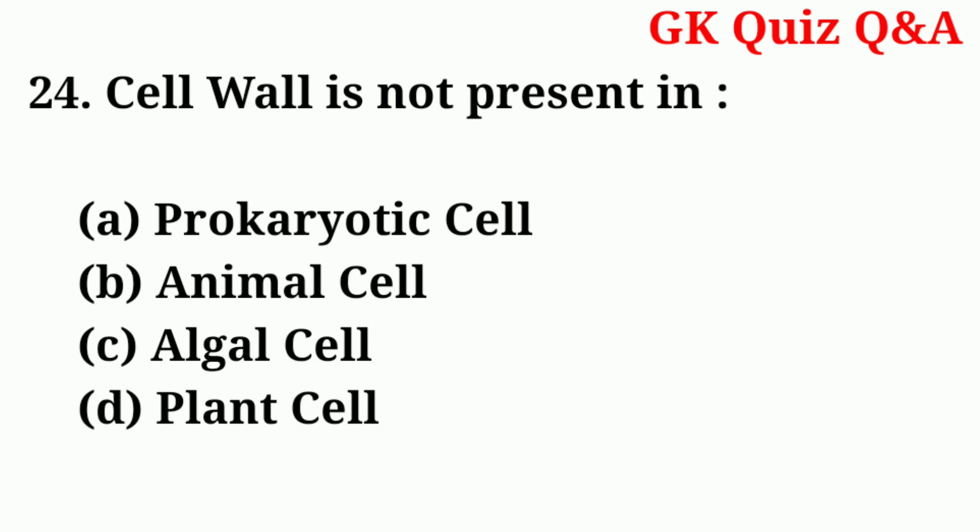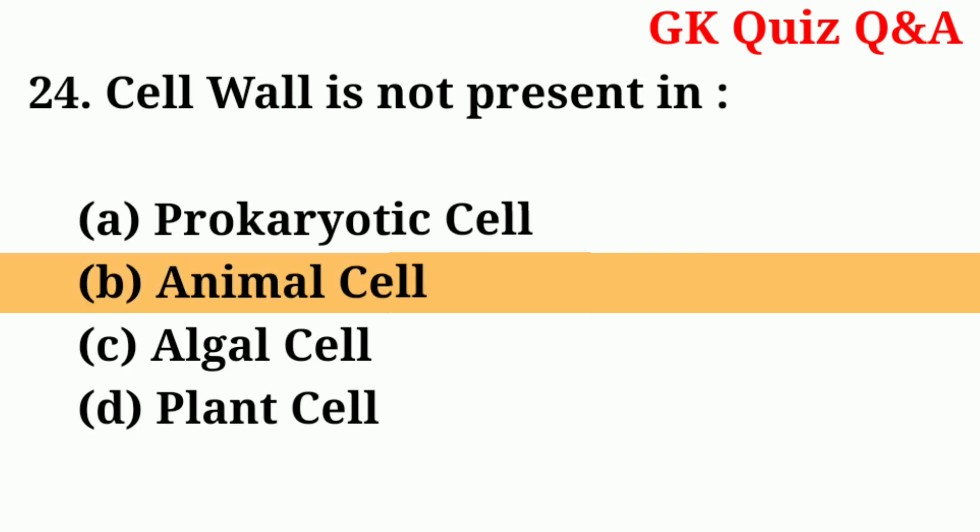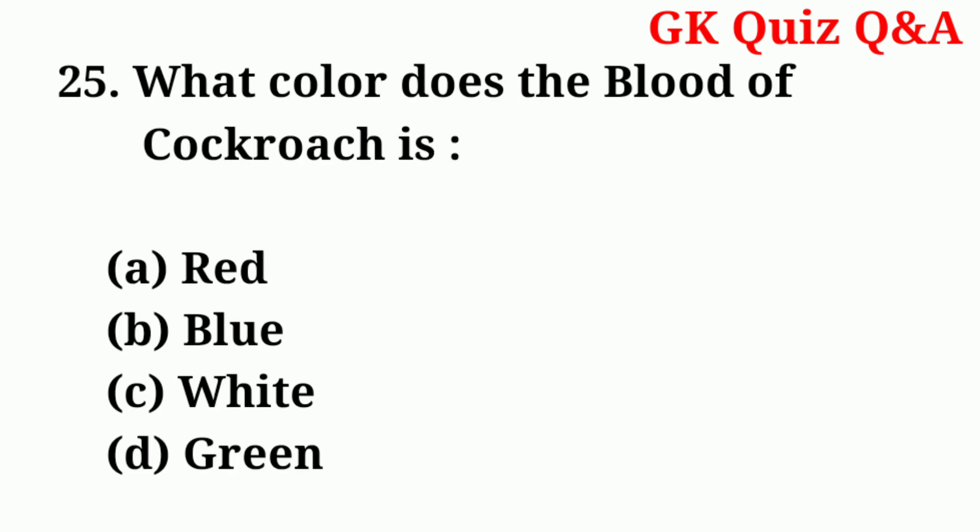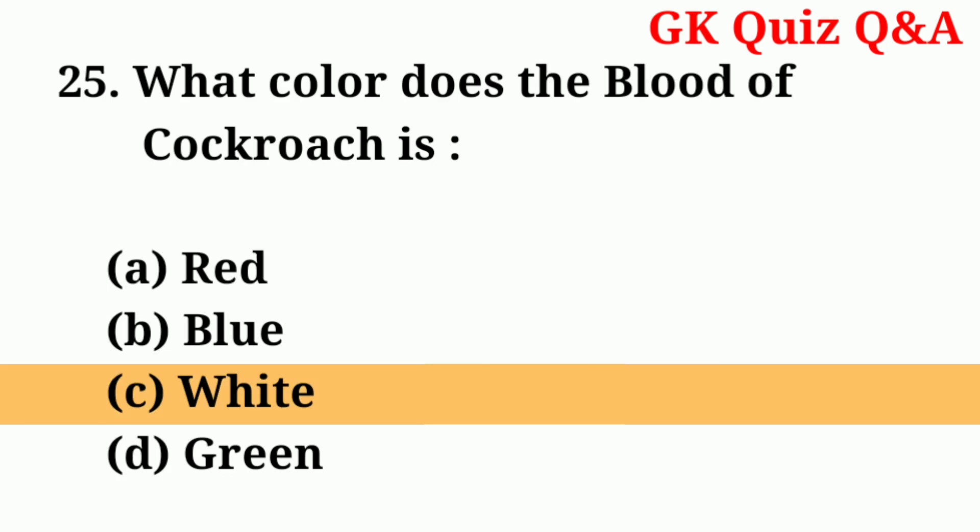Number twenty-four: cell wall is not present in — number twenty-five: what color is the blood of cockroaches? Answer: number C — white.